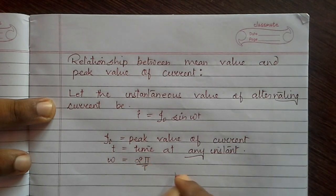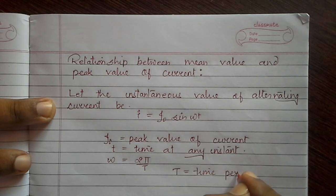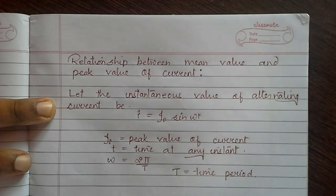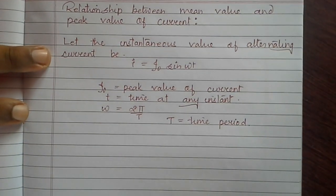Where T is the time period, the time of one complete oscillation or time taken by the alternating current to complete one cycle.